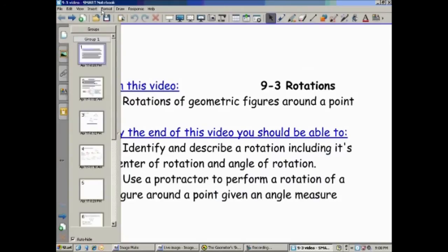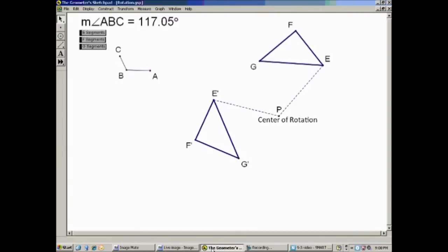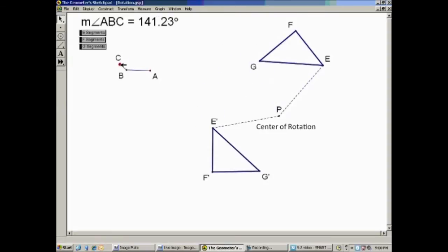Again, before we jump into the definition that the book gives, let me show you just briefly what it is on Geometer Sketchpad. So here I have P as my center of rotation, and I have triangle EFG. Up here I have triangle EFG, and I've reflected it using this angle, so I can reflect it around. The center of that rotation is point P, which you can see, and the angle is up here.